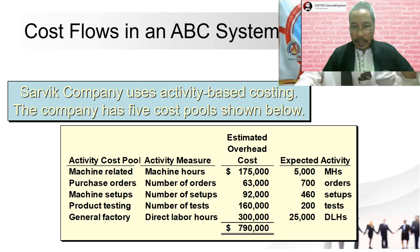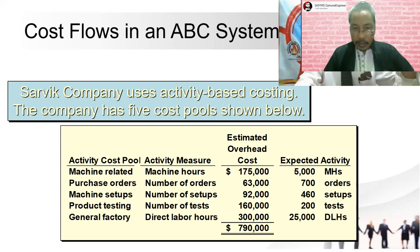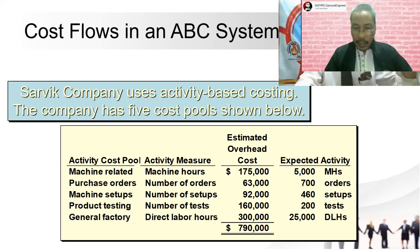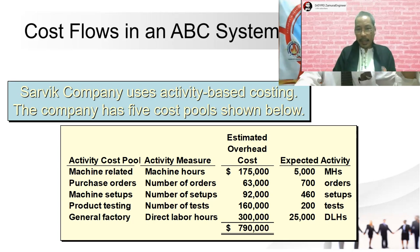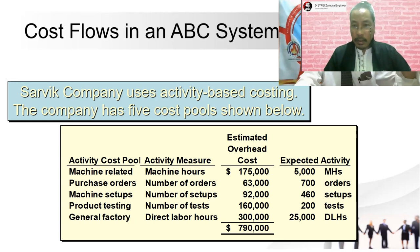The third column shows estimated overhead cost. On the first line we have $175,000; second line $63,000; and so on up to $300,000 for the last one. If you use your calculator, the total is equal to $790,000. The next column shows the expected activities — I think this is for one year.